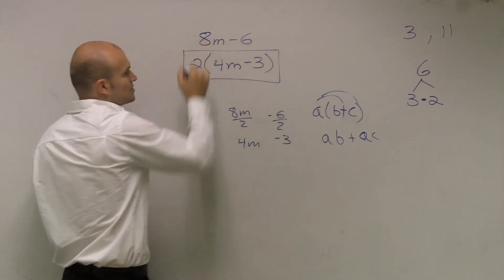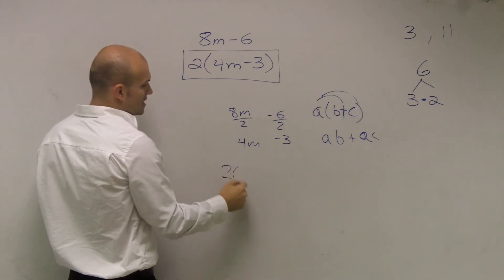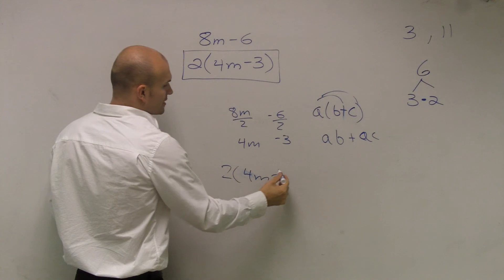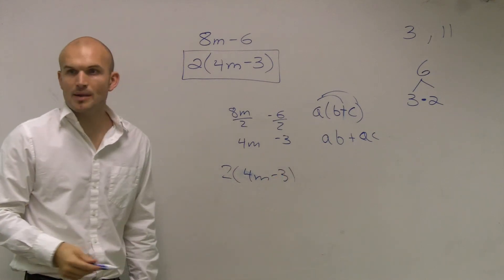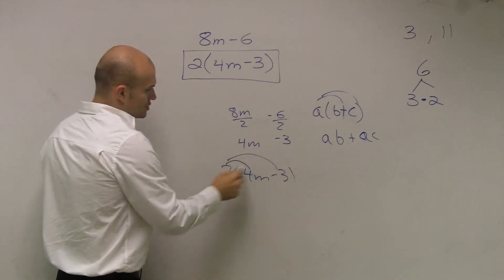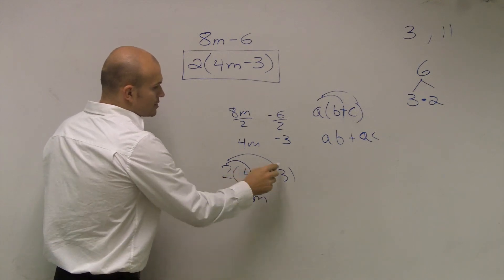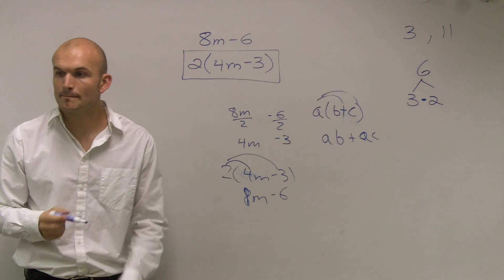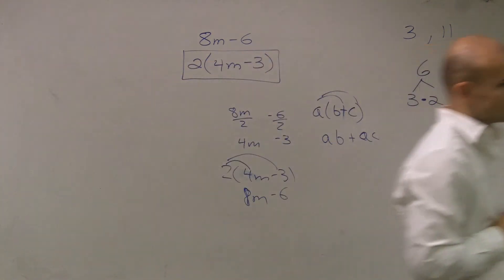So therefore, that is going to be your factored form. And what I was talking about earlier was if you want to check your work, just apply the distributive property. 2 times 4m is 8m. 2 times negative 3 is negative 6. And that's it.